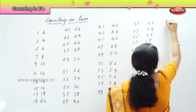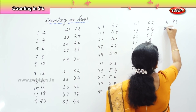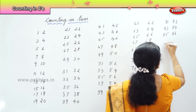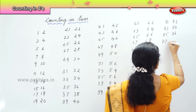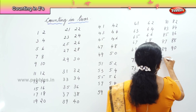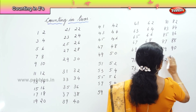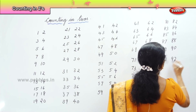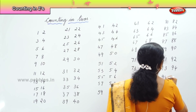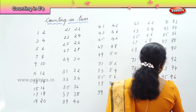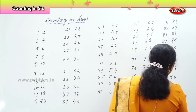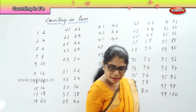Alright. 81, 82, 83, 84, 85, 86, 87, 88, 89, 90, 92, 93, 94, 95, 96, 97, 98, 99. And you have 100. We have numbers written here.